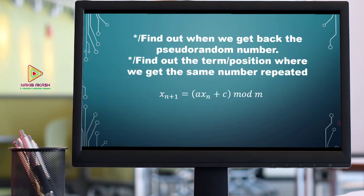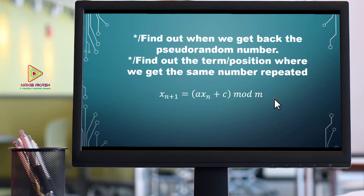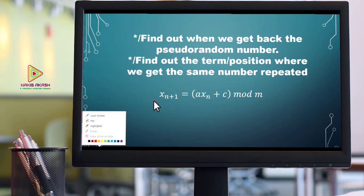We can see the function xn+1 = a*xn + c mod m. Modular arithmetic is very important in all places. This function is the core of the random number generator, similar to what is used in simulation, banking account number systems, and similar applications.